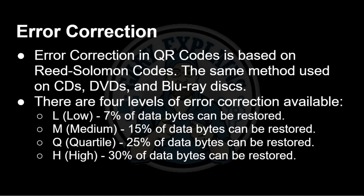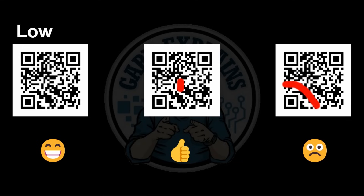The error correction used is Reed-Solomon codes — very famous, also used in CDs, DVDs, and Blu-rays. A QR code can have four levels of Reed-Solomon error correction, specified in the format data inside the code. Low (L) can restore 7% of corrupted data, Medium (M) 15%, Q 25%, and High (H) 30%. However, as you add more error correction, you leave less space for actual data — so there's a trade-off between data capacity and error correction level.